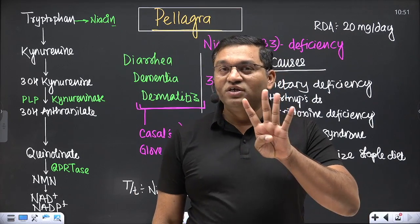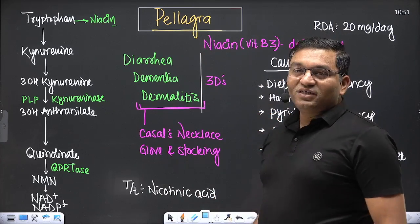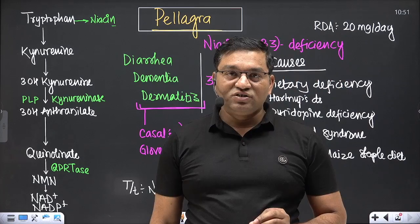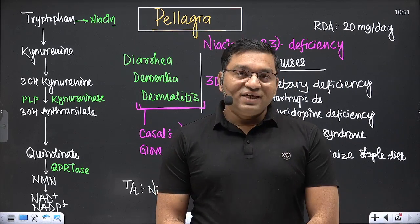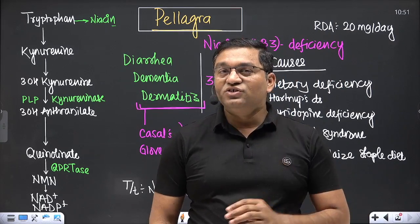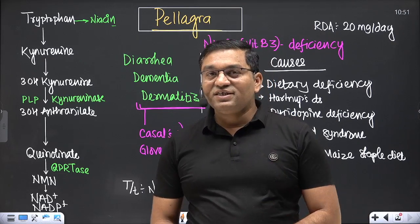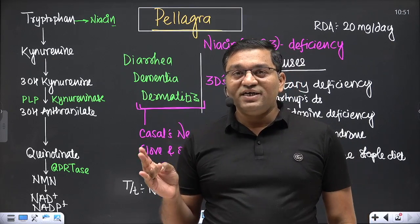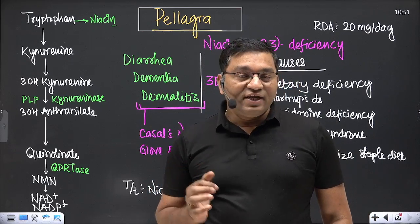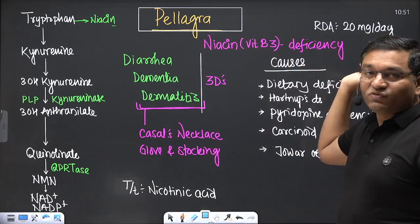Remember: diarrhea, dementia, dermatitis — and if untreated, it can cause death, so the fourth D is death. This is a feature of niacin deficiency. The most common cause is dietary deficiency of niacin. Niacin is present in yeast, meat, cereals, pulses, and legumes.